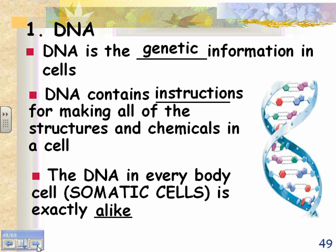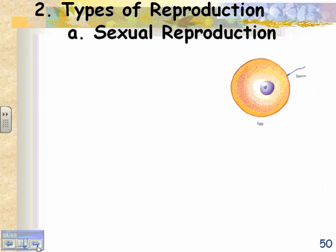Think of it like an instruction booklet on how to make an airplane. If you read the part on how to put the wheels on, you can go ahead and put the wheels on. You'd read a different part to make the wings, and a totally different part to put the steering wheel on. Your cells are like that — you have the instruction booklet in every cell, but you only read the parts you need for each individual cell.